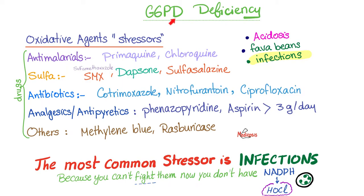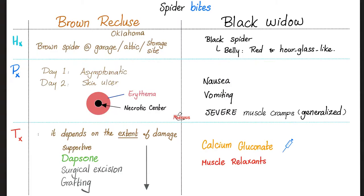Glucose-6-phosphate dehydrogenase deficiency — dapsone is one of the oxidative stressors, among other antibiotics, among fava beans, among other medications. But still, the most common stressor for G6PD is infections.